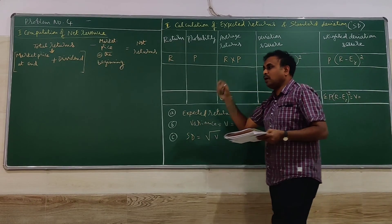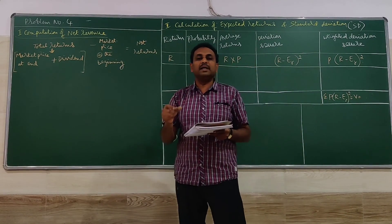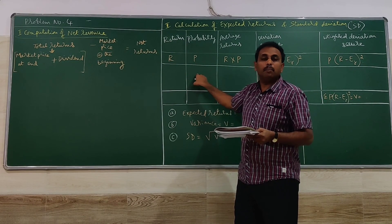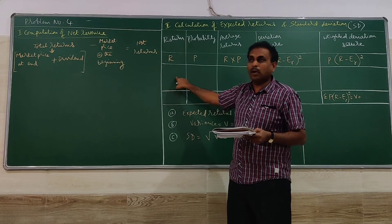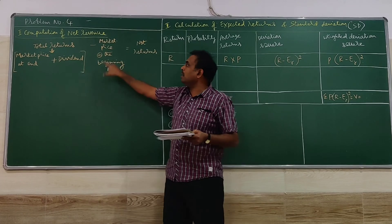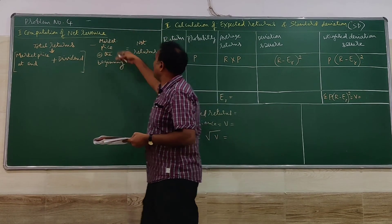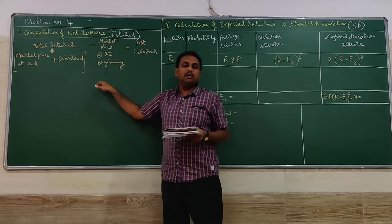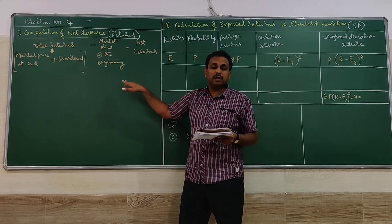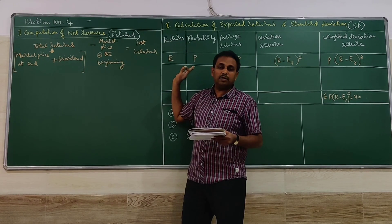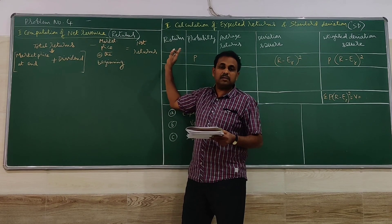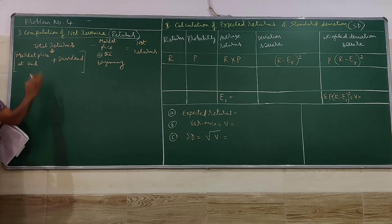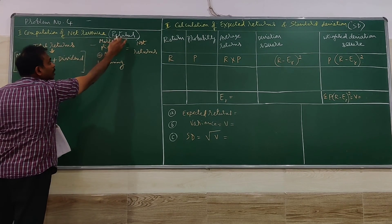What we have to observe in this problem is that the returns are not given — only probability is given. So our first computation should be to find the net returns. Then we have to go for the calculation of expected returns and the standard deviation.